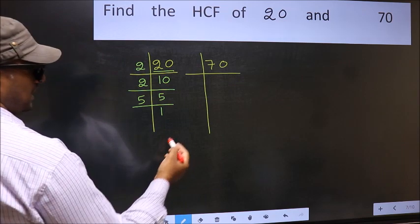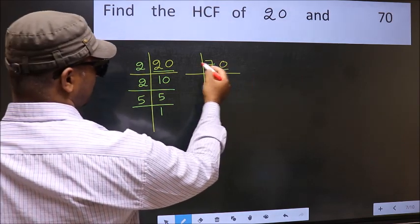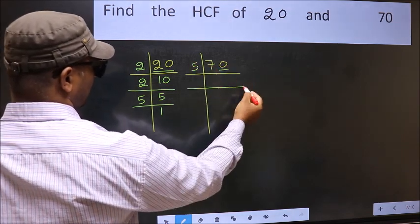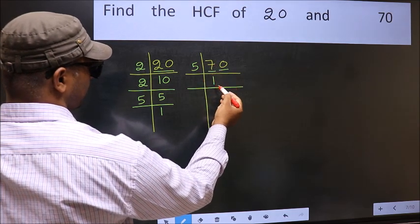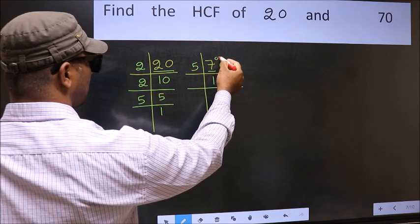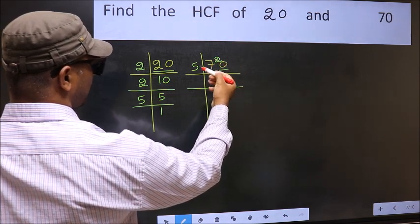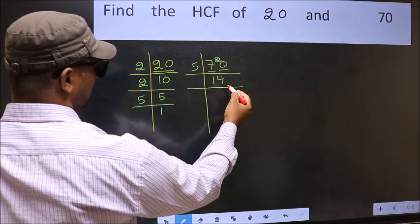Now the other number. Last digit is 0, so take 5. First number 7. A number close to 7 in 5 table is 5 once 5. 7 minus 5 is 2, carried forward 20. When do we get 20 in 5 table? 5 fours 20.